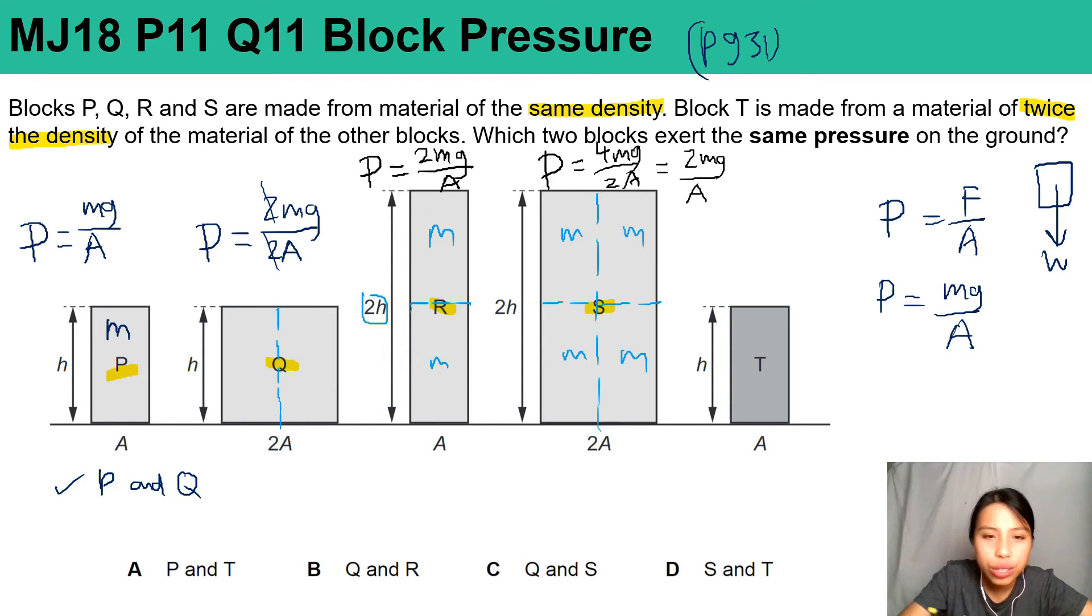So R and S are actually having the same pressure, but the choice is not there. The last one, this is kind of the same size as P but it's darker color. They say the density is twice of all the other blocks.